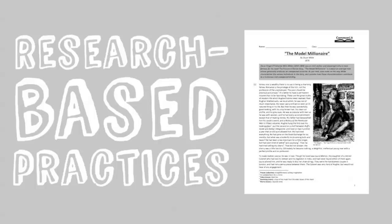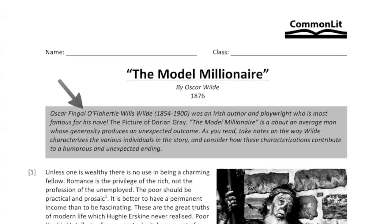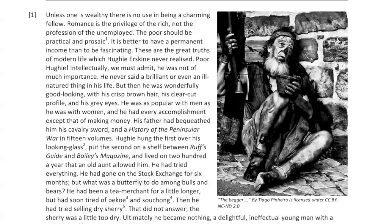CommonLit was created to support research-based best practices in literacy instruction. Each text features a short introduction that gives students the essential background knowledge they need to tackle the text. Next, students are given an annotation task, which helps focus the reading and ensures that students are honing in on the complex ideas at the heart of the work. We've also added footnotes to define Tier 2 and 3 vocabulary. During reading, students mark up the text with their original notes, using the annotation task as a guide.